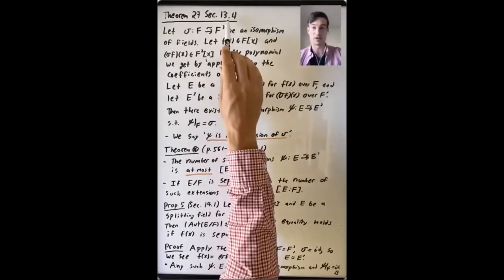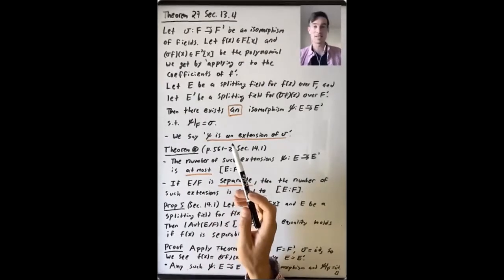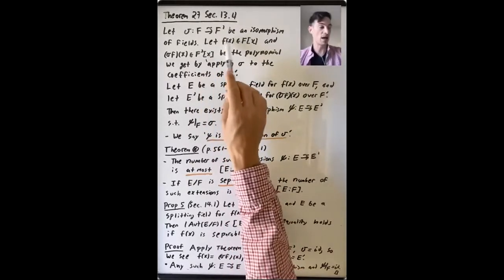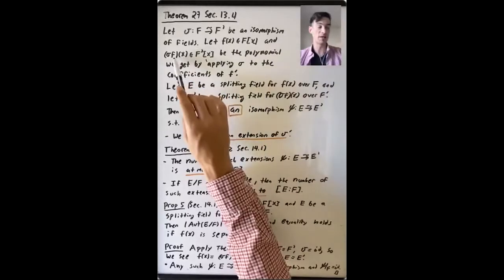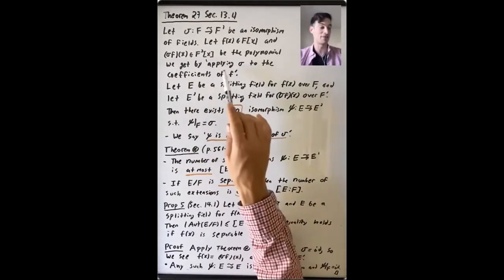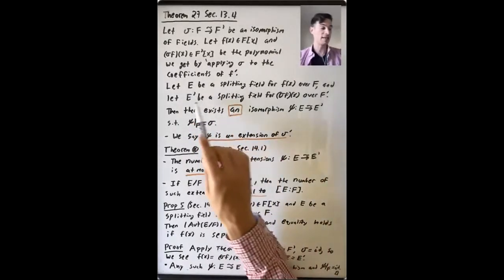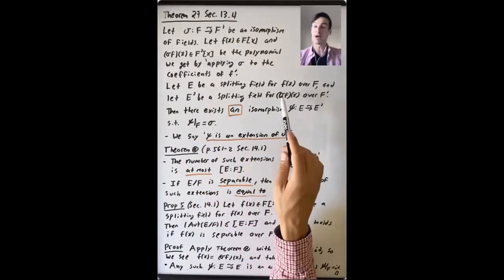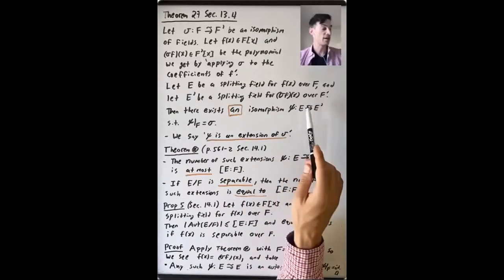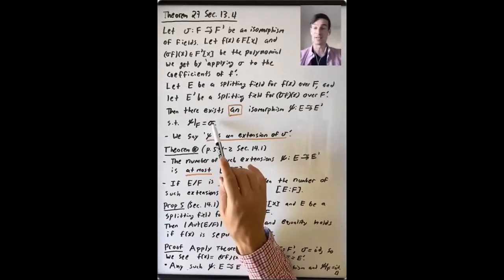This was Theorem 27 in Section 13.4, and it built on an earlier result. The setup is: we let σ be an isomorphism of fields from F to F'. We have some polynomial f(x) in F[x] and the corresponding polynomial σ(f(x)) in F'[x], which is the polynomial we get by applying σ to the coefficients of f.